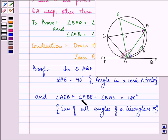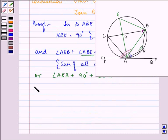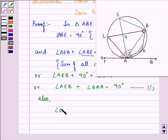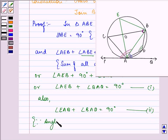Now, if one angle is equal to 90 degrees, then the sum of the remaining two angles becomes equal to 90 degrees itself. So angle AEB plus angle BAQ becomes equal to 90 degrees. Let this be the first equation. Also, we can see that angle EAB plus angle BAQ is equal to 90 degrees. Let this be the second equation and this is because it is the angle between the tangent and radius.